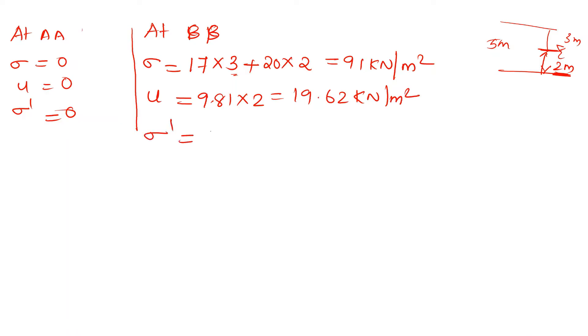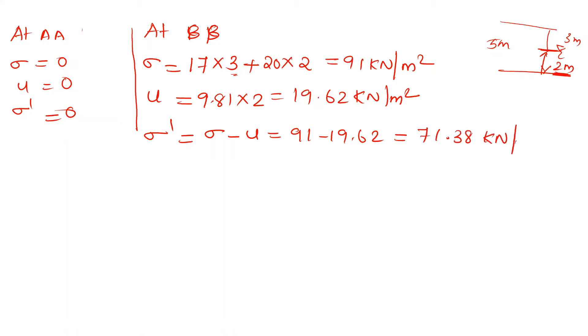The effective stress sigma dash equals total stress minus pore pressure: 91 minus 19.62 equals 71.38 kN/m². This is the effective stress at the interface layer BB.